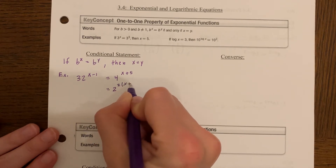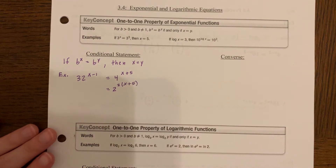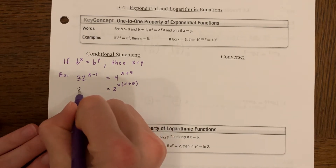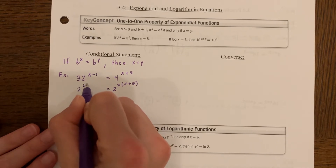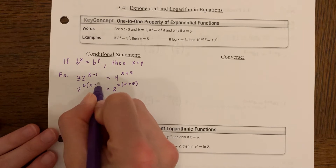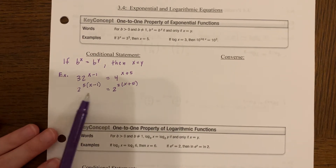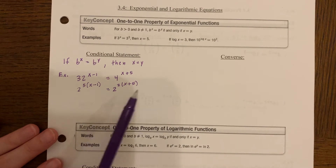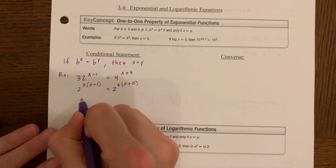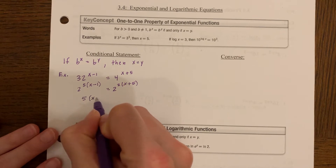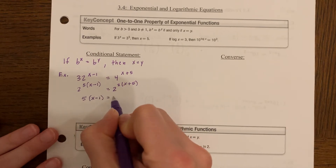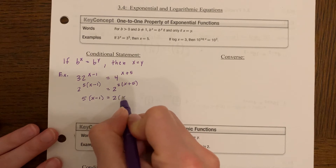Since 4 is 2 squared, I keep the (X plus 5) in parentheses. Now 32 can also be written as an exponent with base 2 — 32 is 2 to the fifth power — and I keep the (X minus 1) in parentheses. Now that I have two exponents with the same base, I can set the powers equal: 5 times (X minus 1) equals 2 times (X plus 5).